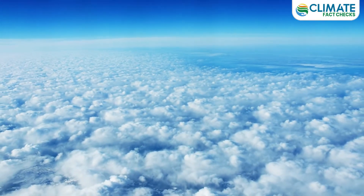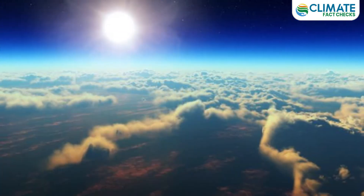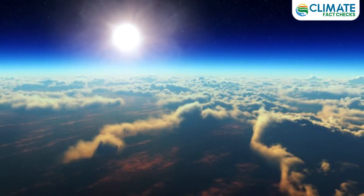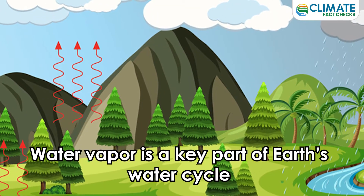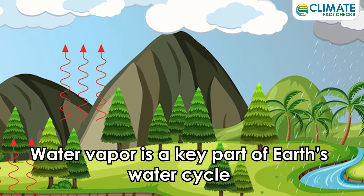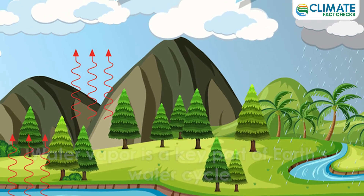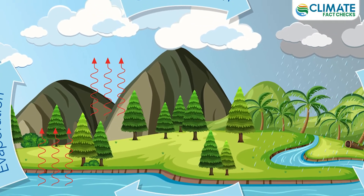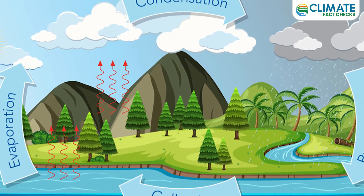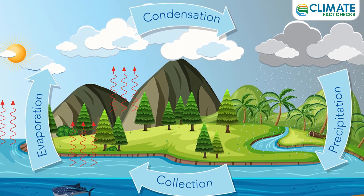Some people mistakenly believe water vapour is the main driver of Earth's current warming. However, water vapour is a key part of Earth's water cycle — the path that all water follows as it moves around the Earth's atmosphere, land and ocean as liquid water, solid ice, and gaseous water vapour.